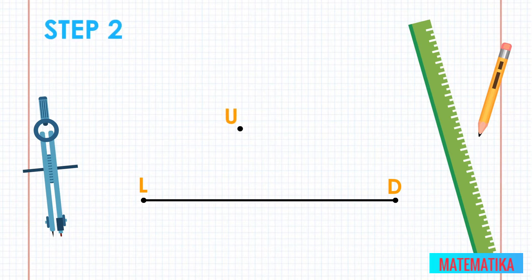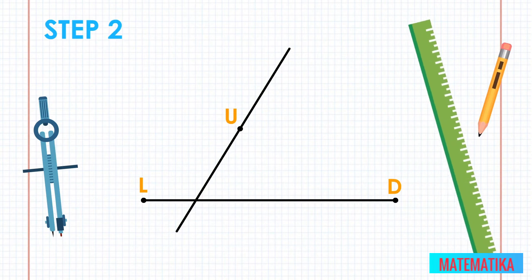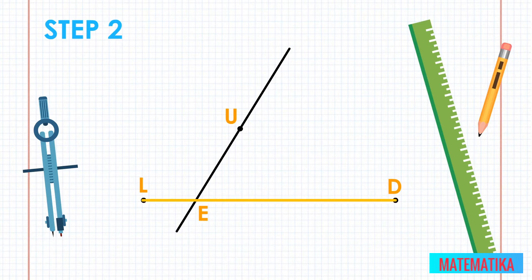Step 2: Next, we will use our straight edge to construct a transverse — a line intersecting your original line and going through your point above the line. Try to make it at an angle that's not 90 degrees; this will make your work clearer to you. Label the intersection of your transverse and your original line with another letter not already used. We will call ours point E. So far, we have line LD intersected by transverse UE.